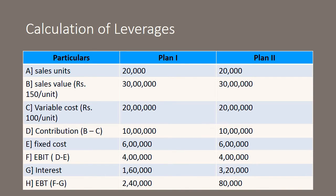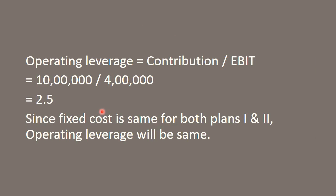Since we have calculated all the values needed, we now move towards calculation of leverages. First, operating leverage. The formula is contribution upon EBIT. 10 lakhs upon 4 lakhs is 2.5. The fixed cost, sales units, selling price, and variable cost are all the same for both plans, so contribution and EBIT are the same for both — operating leverage is 2.5 for both Plan 1 and Plan 2.